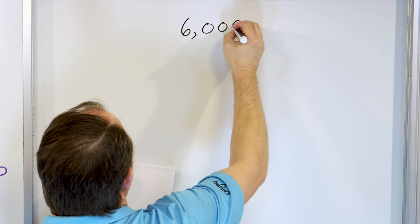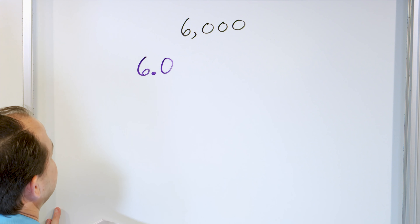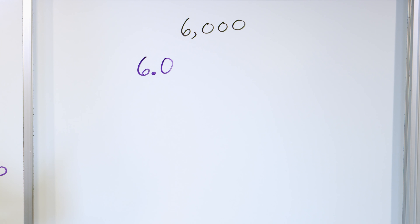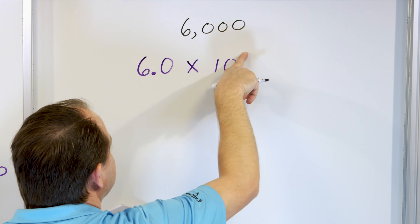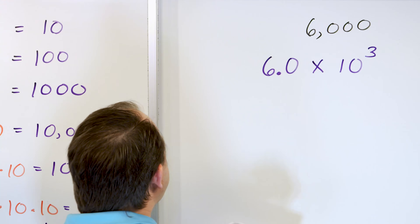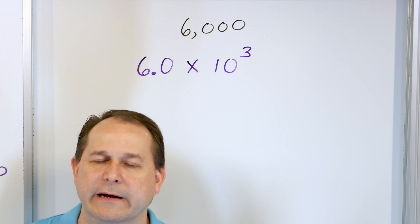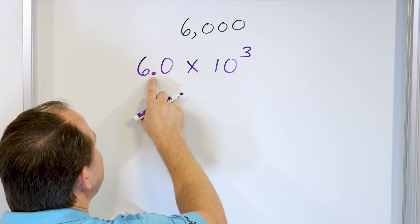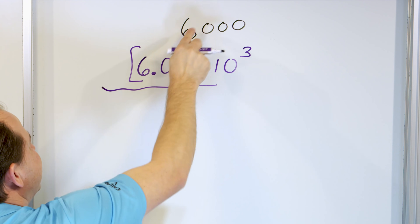Let's take a look at a few more problems. What about the number 6,000? I want to write that in scientific notation. Take the first digit, 6, put a decimal point, grab the next digit, which is 0. Then multiply times 10 to the power of something. From after the 6, the decimal has to move 1, 2, 3 spots, so it has to be times 10 to the 3. You're multiplying 6.0 times 1,000, which is 6,000 — that's all you're doing.